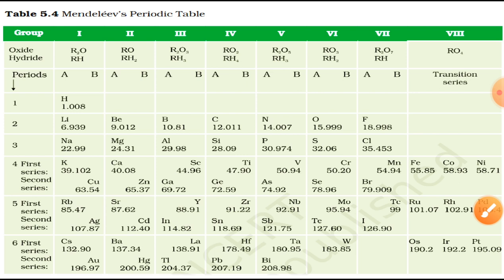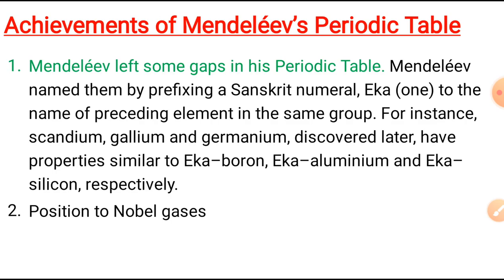These were the limitations, achievements, and criteria used by Mendeleev to classify the elements. Mendeleev is considered a great contributor to the modern periodic law, because he selected chemical properties and physical properties along with atomic mass as criteria for classifying elements. That's all for today. Keep learning, keep asking.